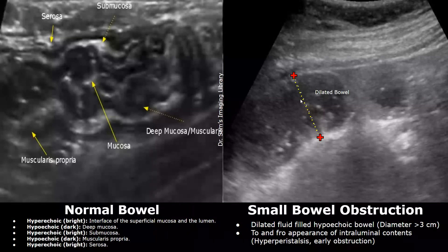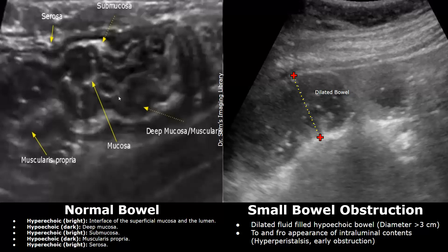In this normal image of the bowel you can see five distinct layers. The innermost hyperechoic layer is the mucosa — the interface of the superficial mucosa and the lumen. The second layer is hypoechoic deep mucosa. The third layer is hyperechoic submucosa. The fourth layer is hypoechoic muscularis propria, and the outermost hyperechoic layer is the serosa. The layers have alternating hyperechoic and hypoechoic echogenicity.